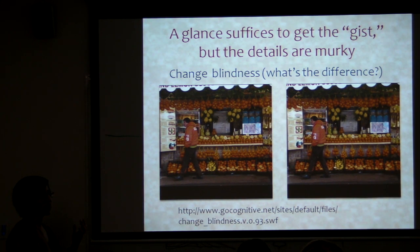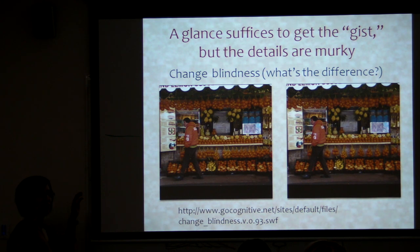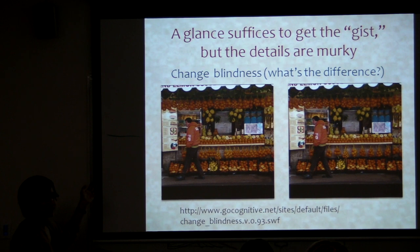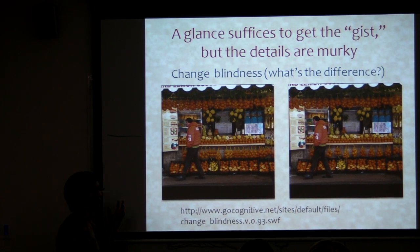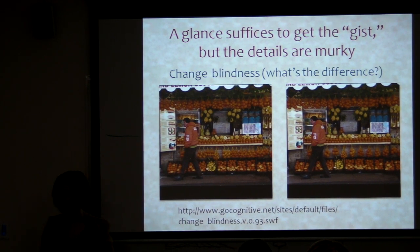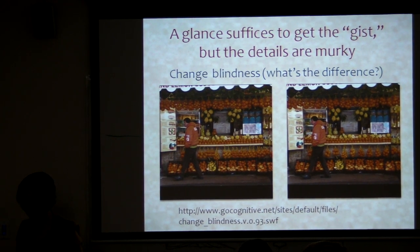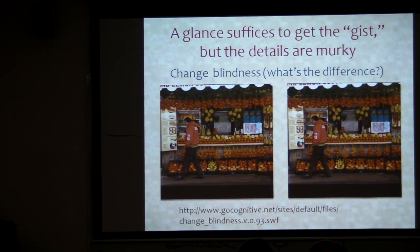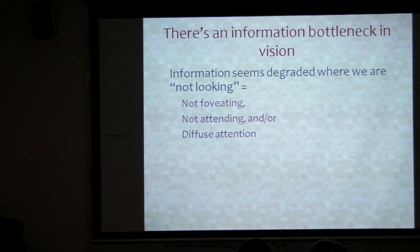I'd like to argue that this is evidence that vision isn't the same everywhere. Because once you know where the change is, it's certainly quite visible. If you look right at it, it's quite clear what the change is.